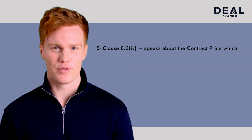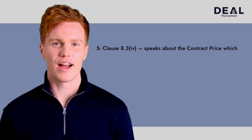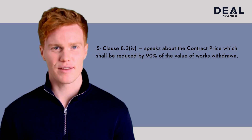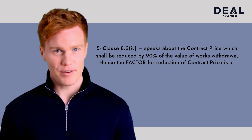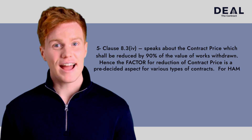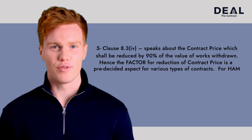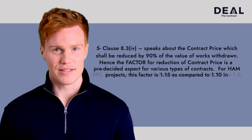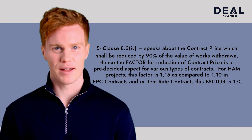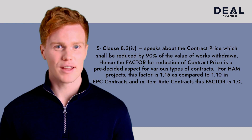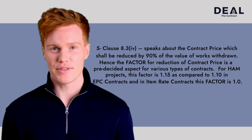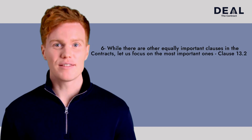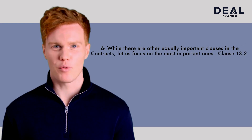Fifth, Clause 8.3.4 speaks about the contract price, which shall be reduced by 90% of the value of works withdrawn. The factor for reduction of contract price is a pre-decided aspect: for HAM projects this factor is 1.15, compared to 1.10 in EPC contracts, and in item rate contracts this factor is 1.06.